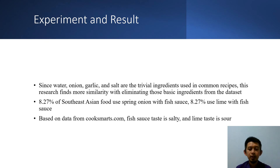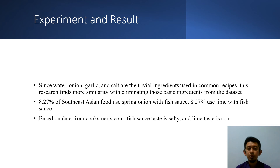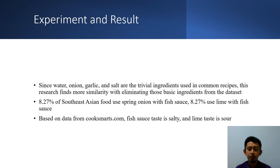Since water, onion, garlic, and salt are trivial ingredients used in common recipes, we tried to find more similarity by eliminating those basic ingredients from the frequent itemset, pruning those items so there will be no water, onion, garlic, or salt processed in the next Association Rule Mining. The finding is that 8.27% of Southeast Asian food uses spring onion with fish sauce together, and another 8.27% uses lime with fish sauce — the two ingredient pairs with the highest percentage excluding basic ingredients.